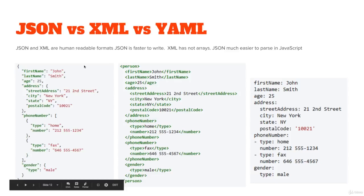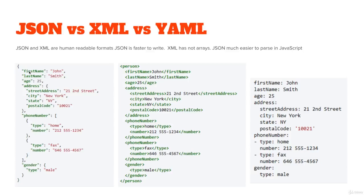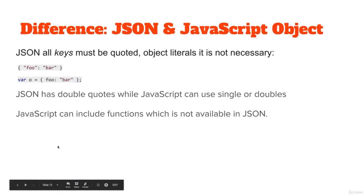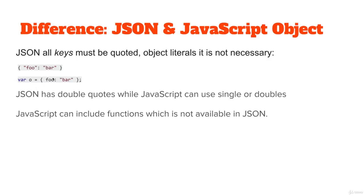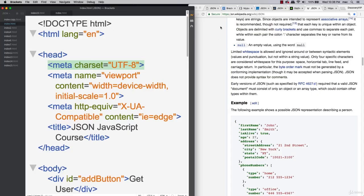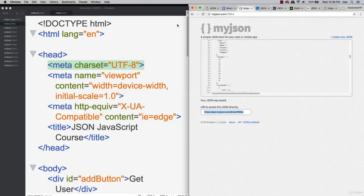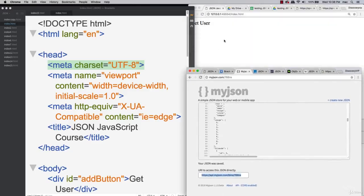Here's a comparison: JSON versus XML versus YAML. JSON is the easiest one to read, write, and use within JavaScript. Within JavaScript, we don't need quotes around key names, but within JSON we need double quotes — single quotes are not interchangeable in JSON. We also can't run any functions within JSON. We'll be showing you tools and resources online to use and work with JSON.